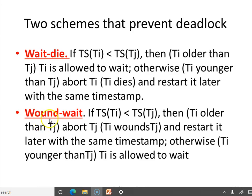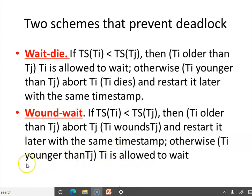The second technique is Wound-Wait. In this case, if the timestamp of Ti is less than the timestamp of Tj, then Ti is older than Tj. In this case, we abort Tj — meaning Ti wounds Tj — and restart it later with the same timestamp. Otherwise, Ti is allowed to wait.